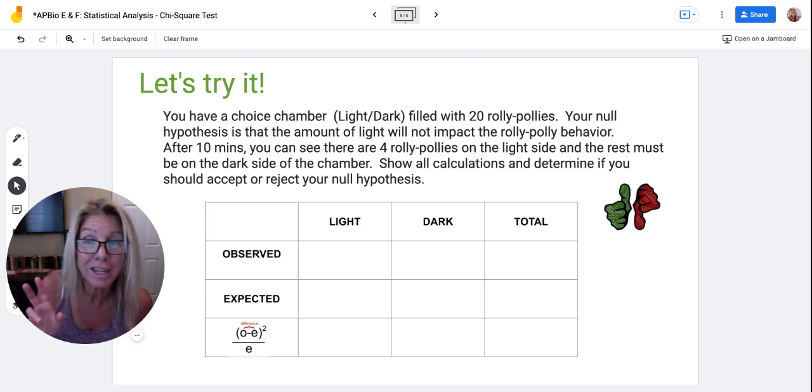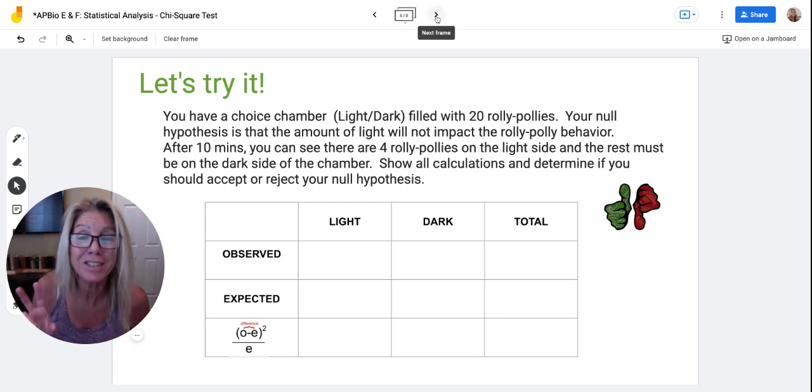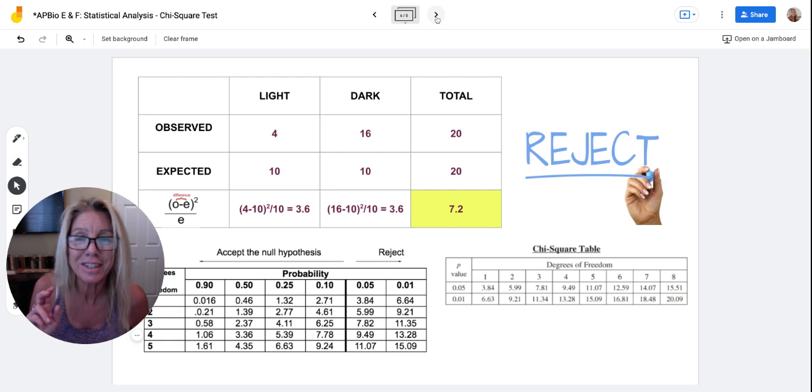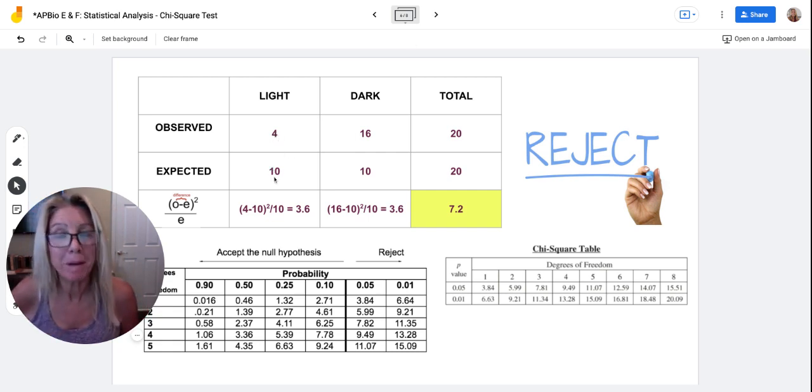Now pause again if you want to try to do it before I show you the answer. So I observed four, I expected 10. So I take four minus 10, and because I squared it, it's still a positive number. I divide it by what I expected, and I got the value of 3.6 just for the light.